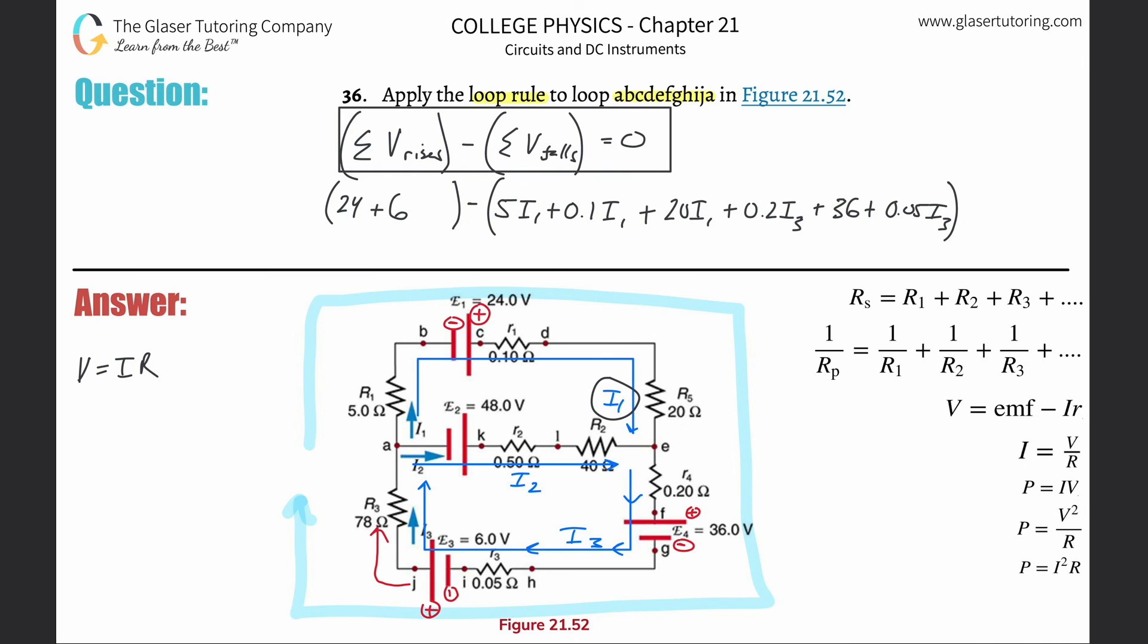We keep trucking along and get to another resistance. We're still traveling in the direction of the current, so it's a potential fall: plus 78 times I3. Finally, we keep traveling and get back to our starting point. Done.